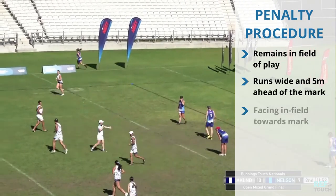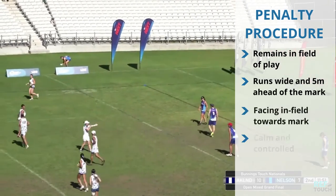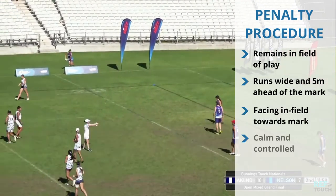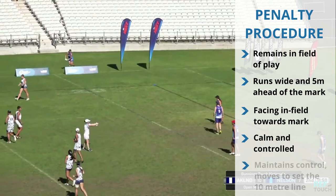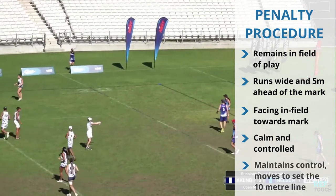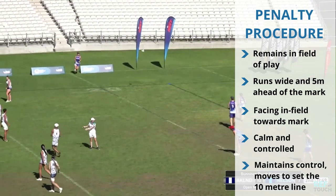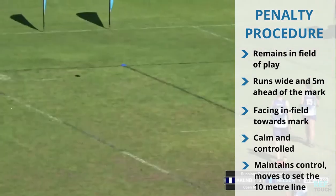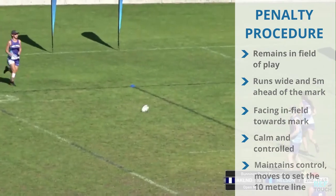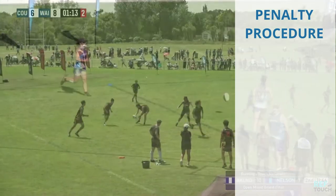Also notice how the referee runs ahead of the mark about 5 metres. This is crucial, not only to display the signal clearly, but it also means the referee doesn't have to go as far to set the first 10 metre defensive line.